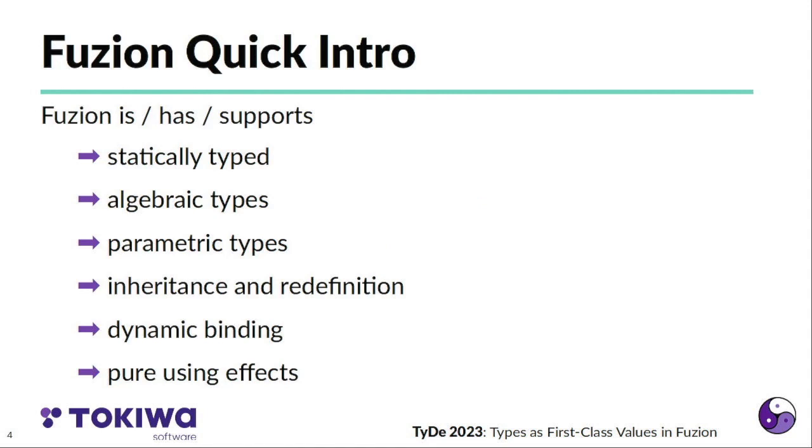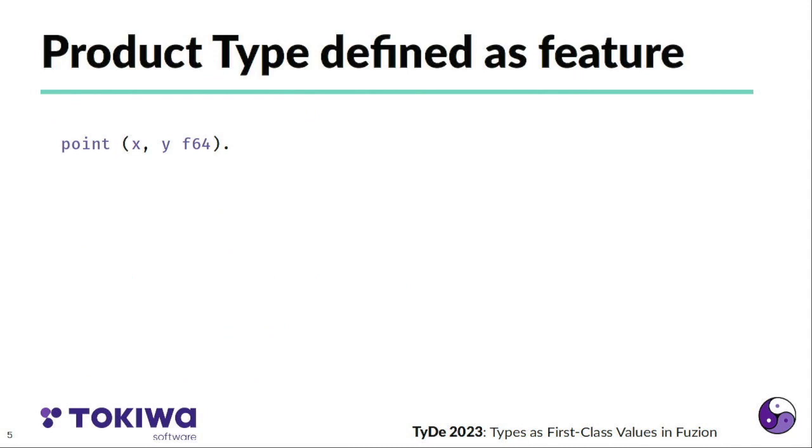Fuzion is statically typed, it has algebraic types, parametric types, it supports inheritance and redefinition, it has dynamic binding, and it is a pure language using effects to encapsulate side effects.